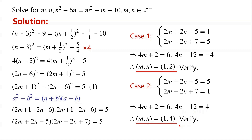Now we verify whether this is a solution of the original equation. If m equals 1 and n equals 4, the left-hand side equals 4 squared minus 6 times 4, which is 16 minus 24, which is minus 8. The right-hand side equals 1 squared plus 1 minus 10, which is minus 8. So the left-hand side equals the right-hand side, confirming m equals 1, n equals 4 is a solution.